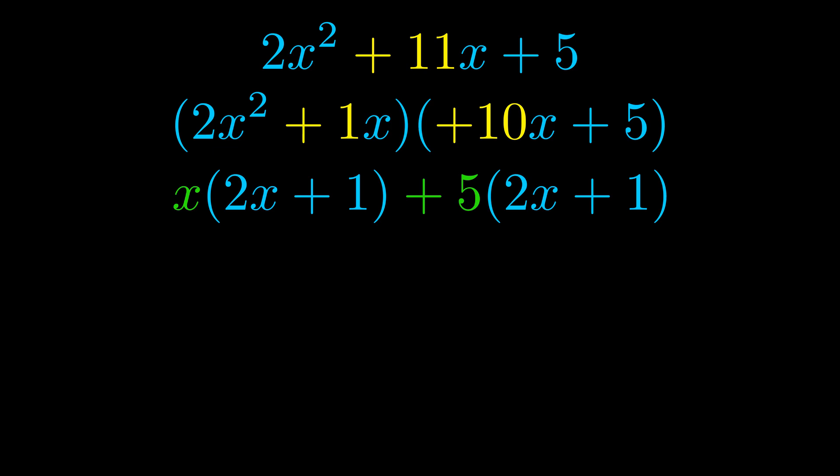Notice also how what remains inside of the parentheses is the same in both cases. The blue values are the same. Those blue values will become one of our factors and we will combine the two green values the GCFs that we pulled out to get the other one. And that is our fully factored equation.